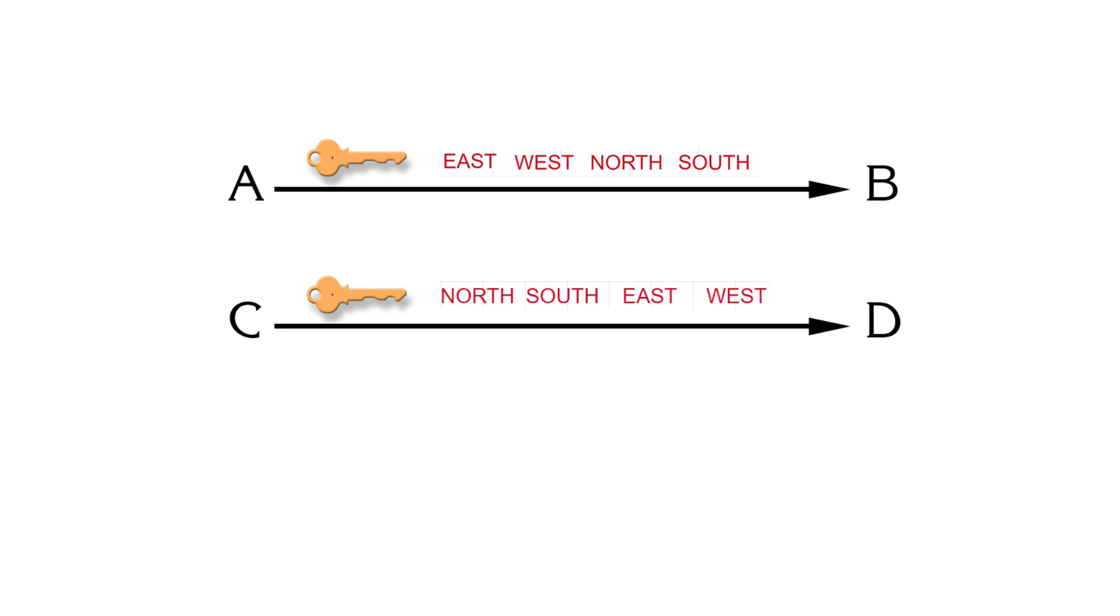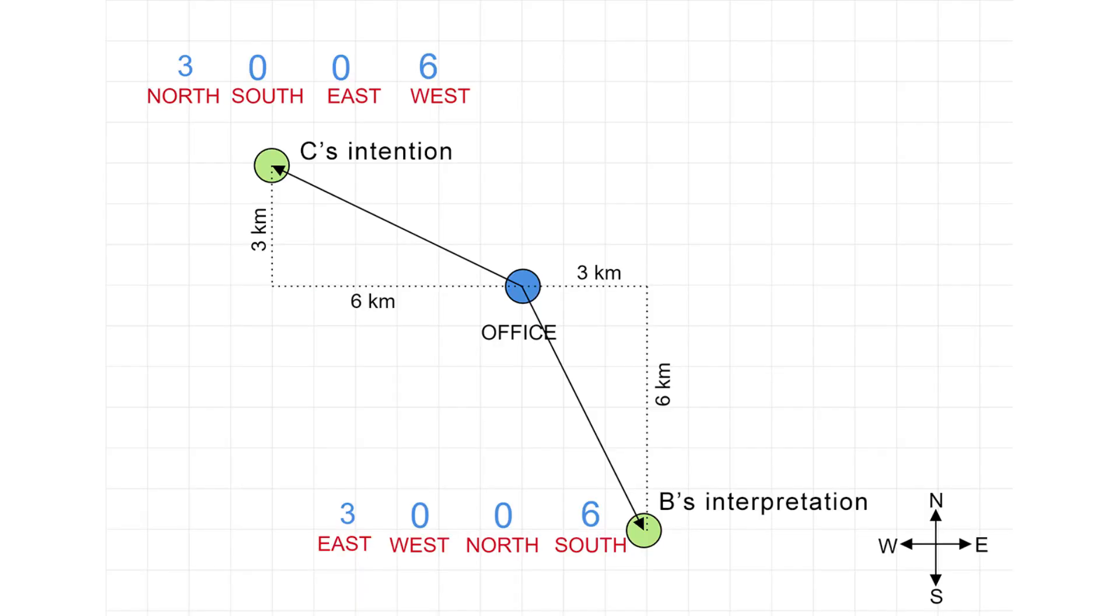But imagine what would happen if these two groups A, B, C, D start cross-communicating. If C sends a message to B, B would interpret message assuming her own order of directions and hence would reach to a wrong location.